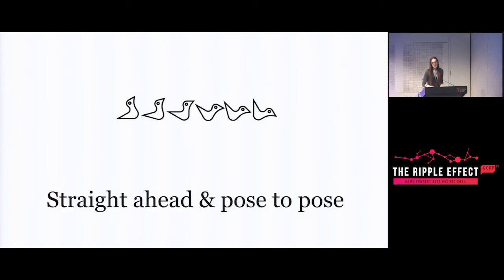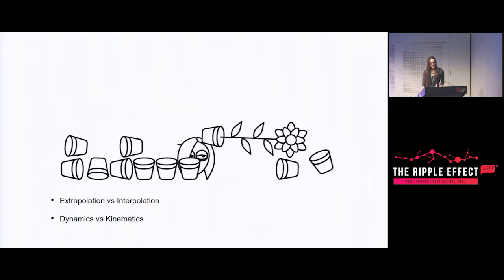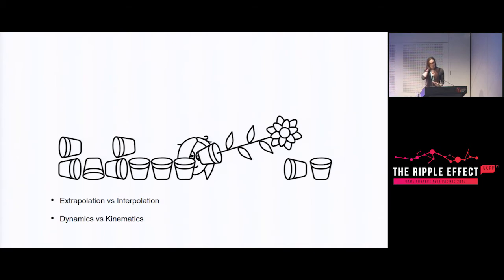The next principle is straight ahead and pose to pose. In the book this is mainly told in the context of literally drawing frames of animation. But translating to game development terms, the principles there are basically about extrapolation versus interpolation - which is dynamics versus kinematics. When I say dynamics, we usually mean physics simulation in games. Interpolation is either literally interpolation, or having hand-animated stuff with timelines and curves. There's a balance between the two.